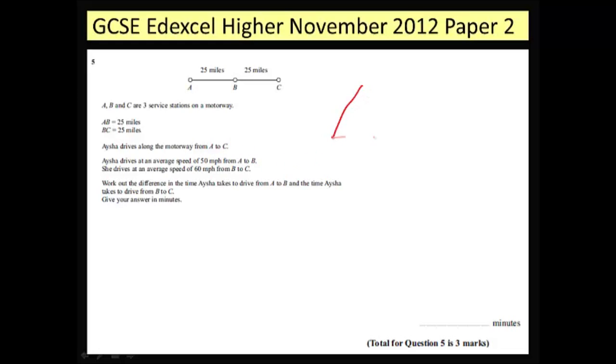It's always nice to remember this as a formula triangle which looks like this: speed, distance and time.